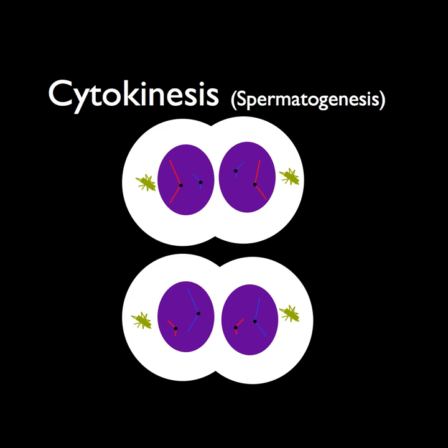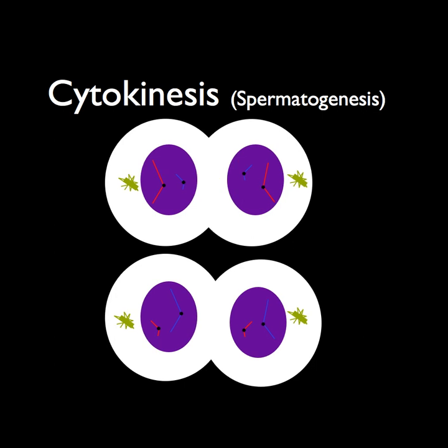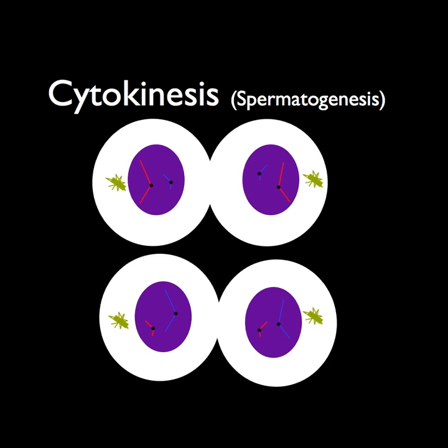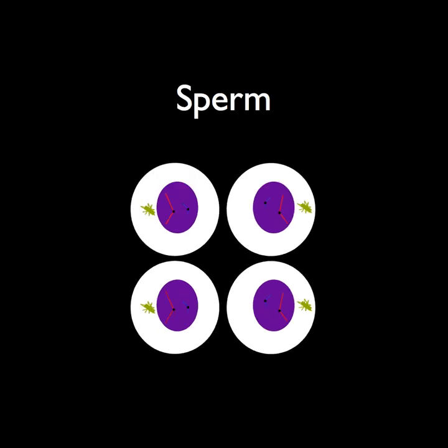Here, spermogenesis cytokinesis begins, and the two cells fully divide into four haploid sperm cells, each with different genetic codes. And now, finally, there are four different sperm, all four ready to race to the egg.